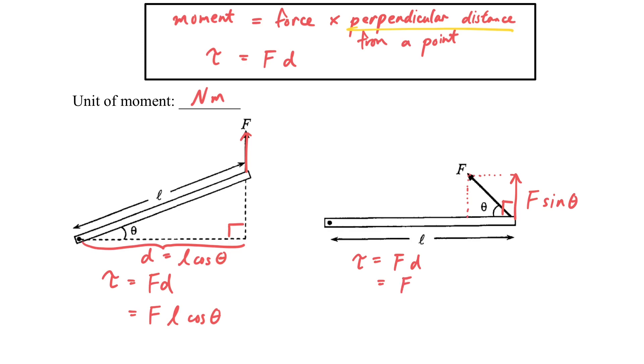And the F now is F sine theta. And the d, in this case, is l. So it's F times l times sine theta.